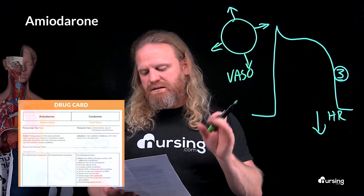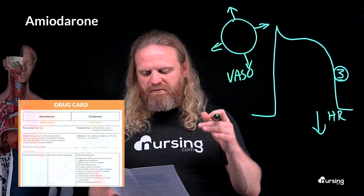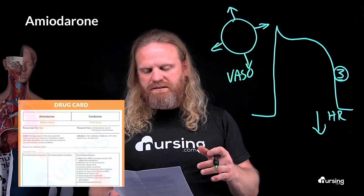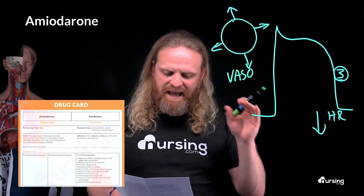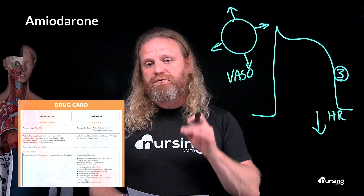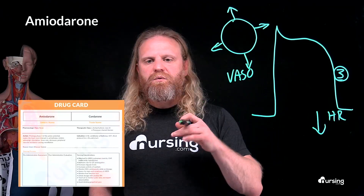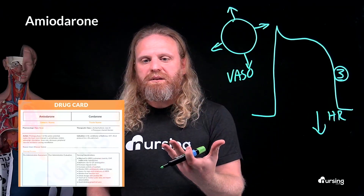Amiodarone is used for afib, ventricular arrhythmias, supraventricular tachycardia, and the ACLS protocol for v-fib and v-tach.